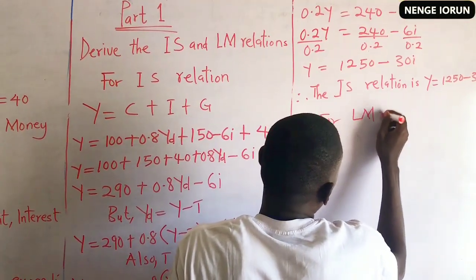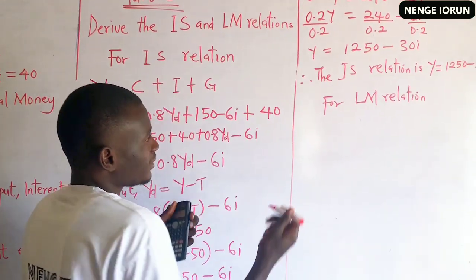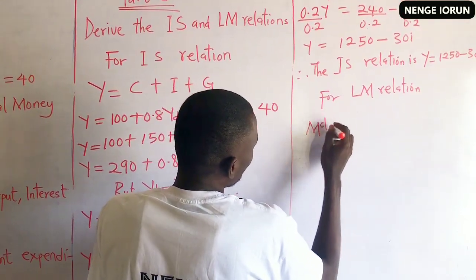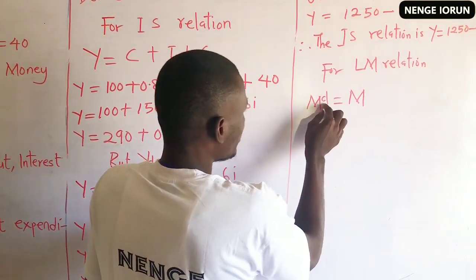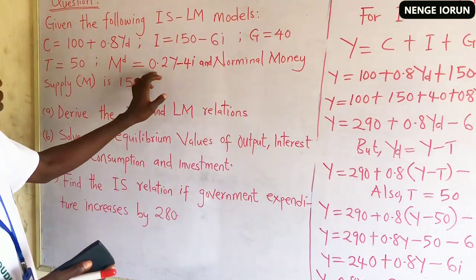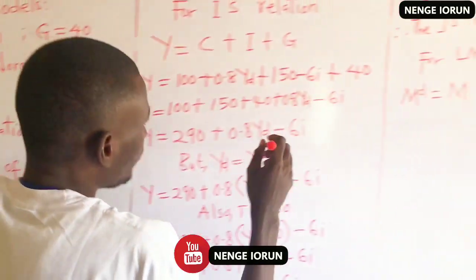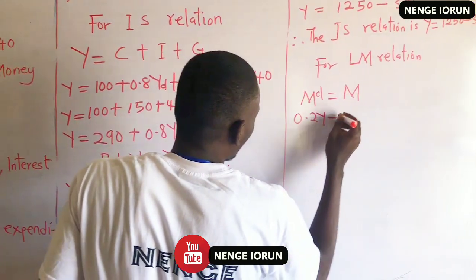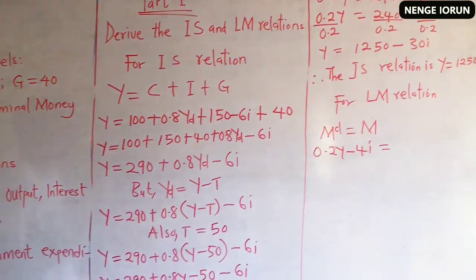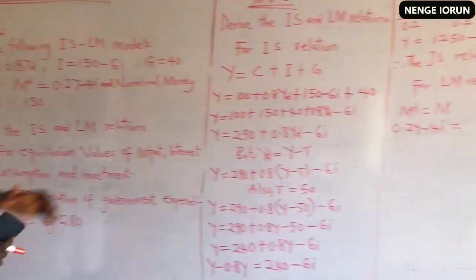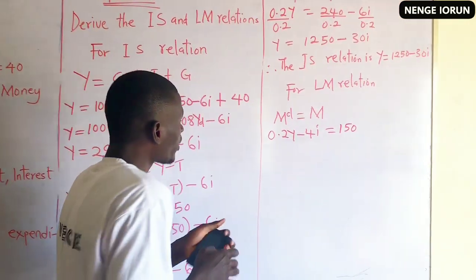For the LM relation, which is the equilibrium in the money market, the condition is MD equals M. Money demand MD is given as 0.2Y minus 4R. Substituting, we have 0.2Y minus 4R equals M. The money supply M is fixed by the central bank, and is given as 150.